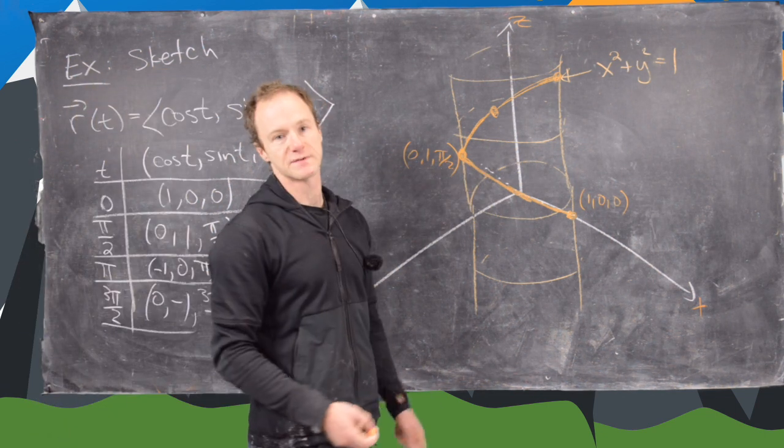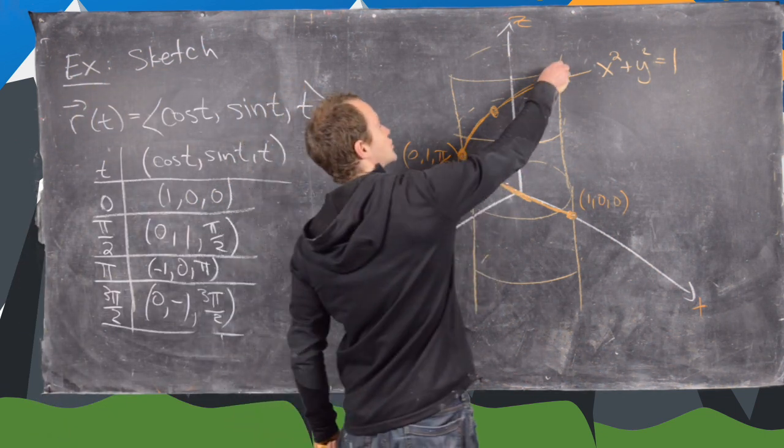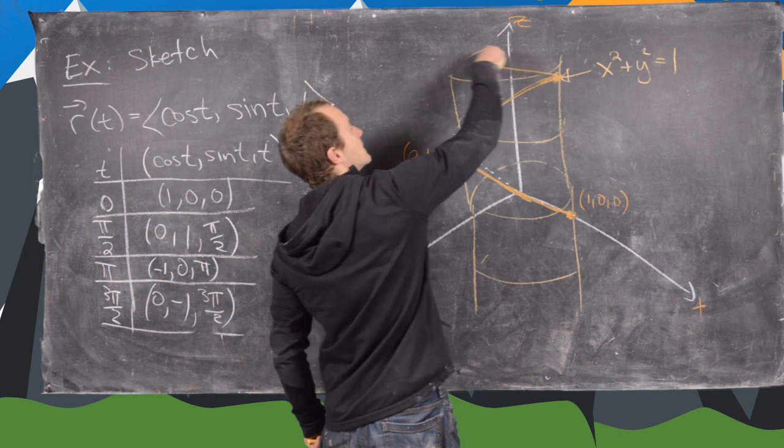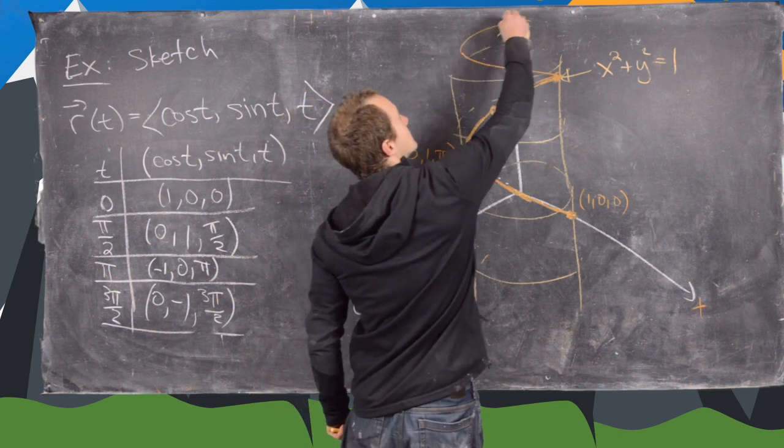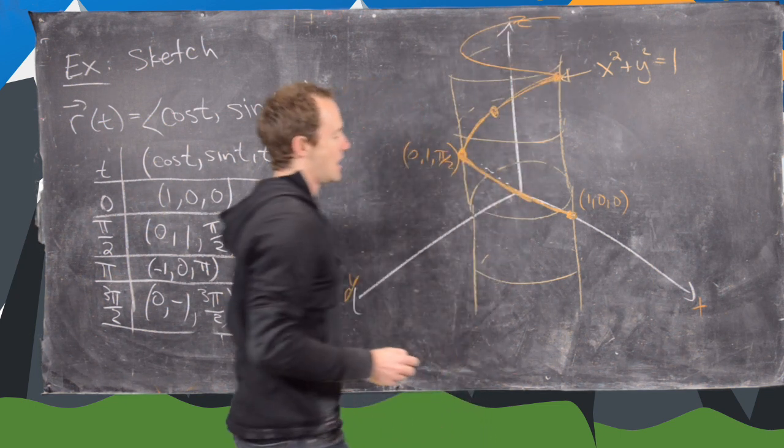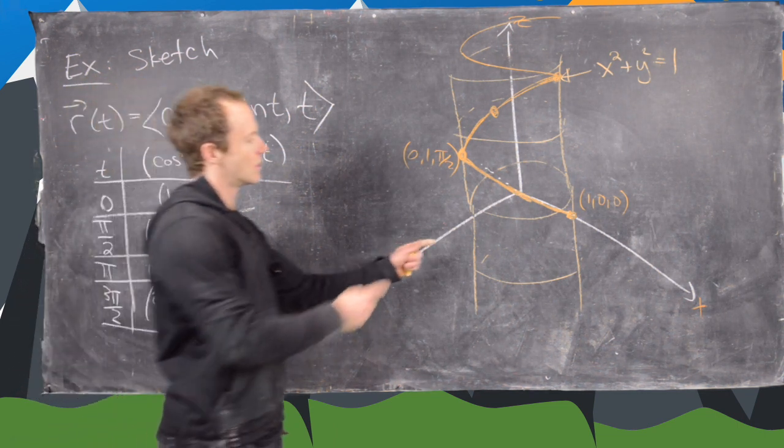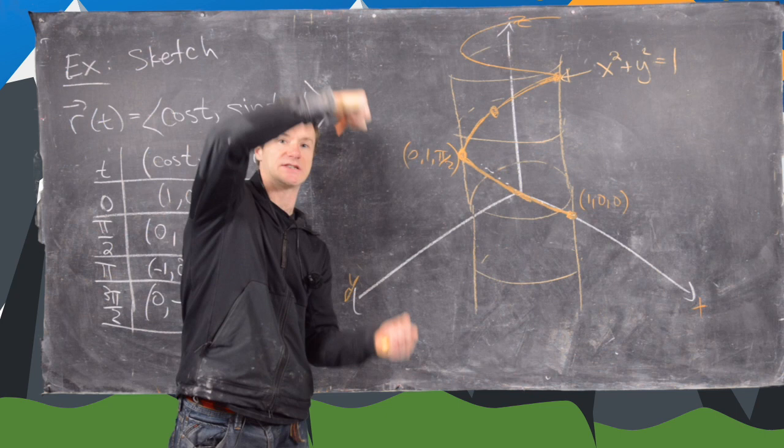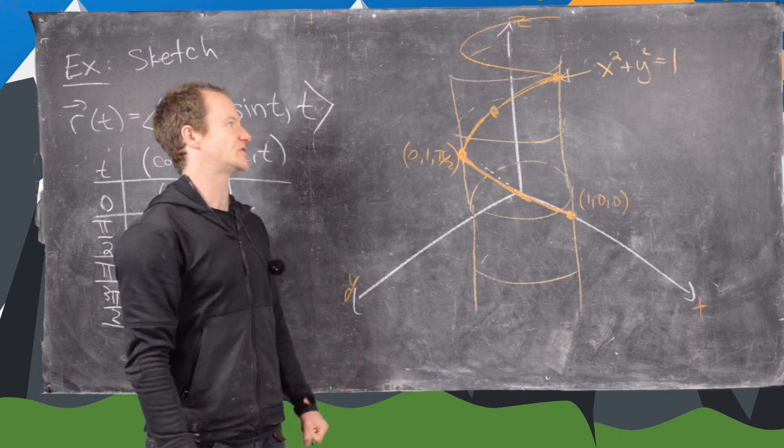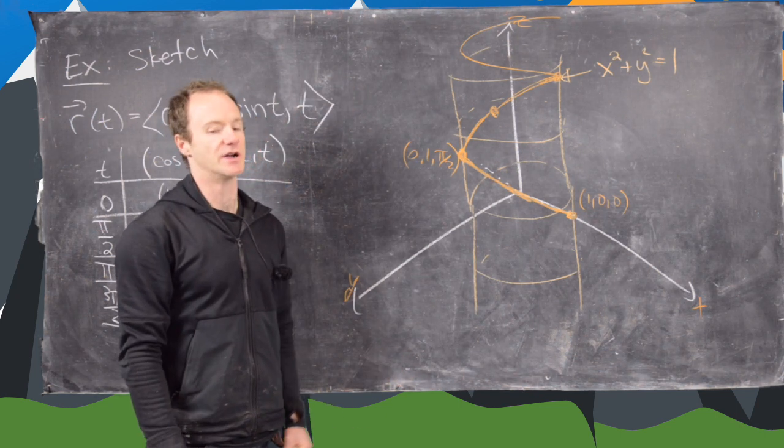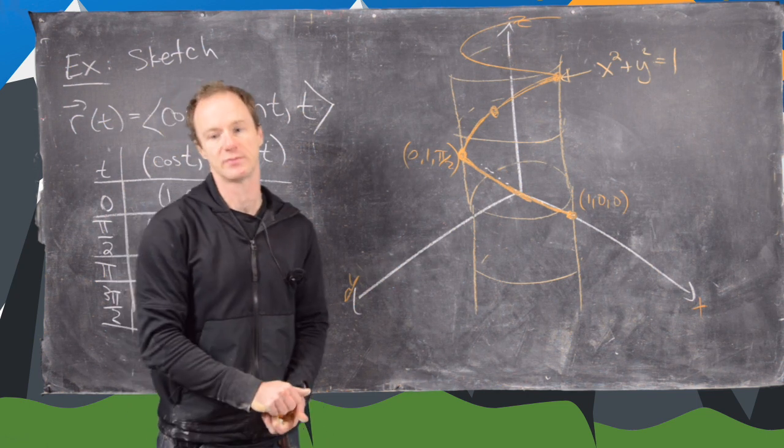And then finally 2 pi. Notice we're going to get 1, 0, 2 pi. So as we can see here, we're swirling around this cylinder in the shape of a helix. So it's like we took a spring and stretched it out. So that's the kind of picture that we're getting here. So I'm going to clean up the board and then we're going to look at one more example.